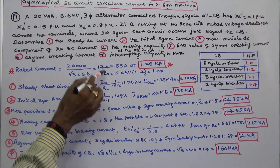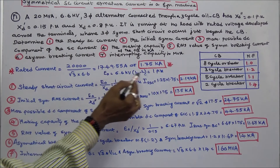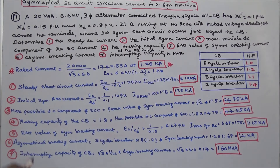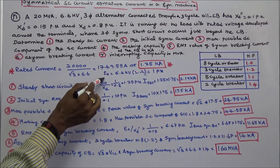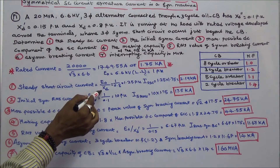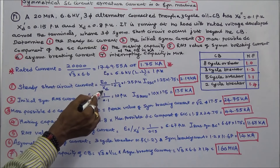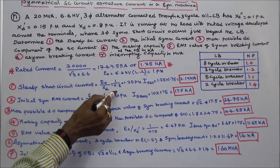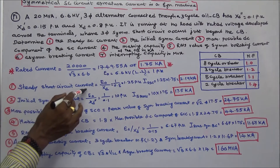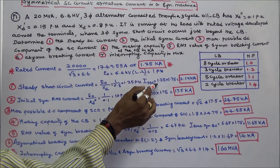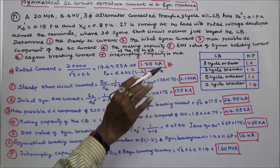E0 is given as 6.6 KV line-to-line voltage, so E0 equals 1 per unit. First, the steady short circuit current equals E0 divided by XD (steady state reactance). E0 is 1, XD is 0.8, so 1 divided by 0.8 equals 1.25 per unit. Actual steady short circuit current is 1.25 into 1.75 kA, which equals 2.19 kA.